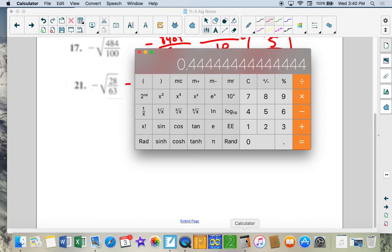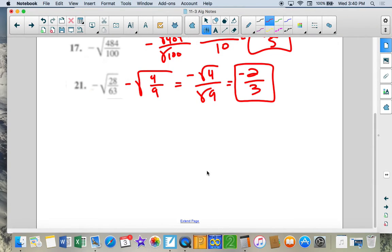Oh, I didn't take the square root of that. Yeah, 0.6 repeating, which is 2 thirds.